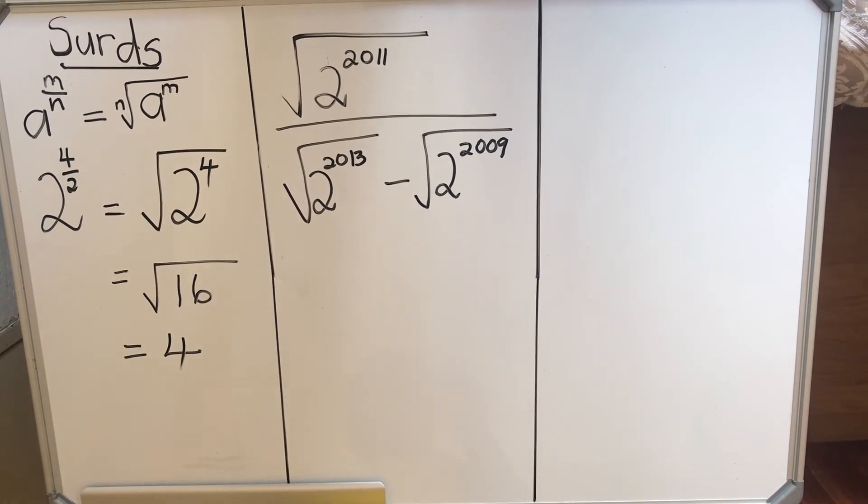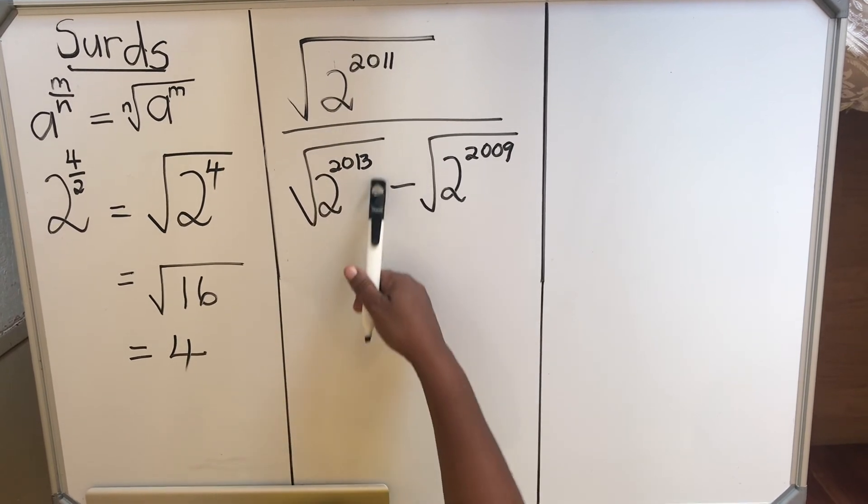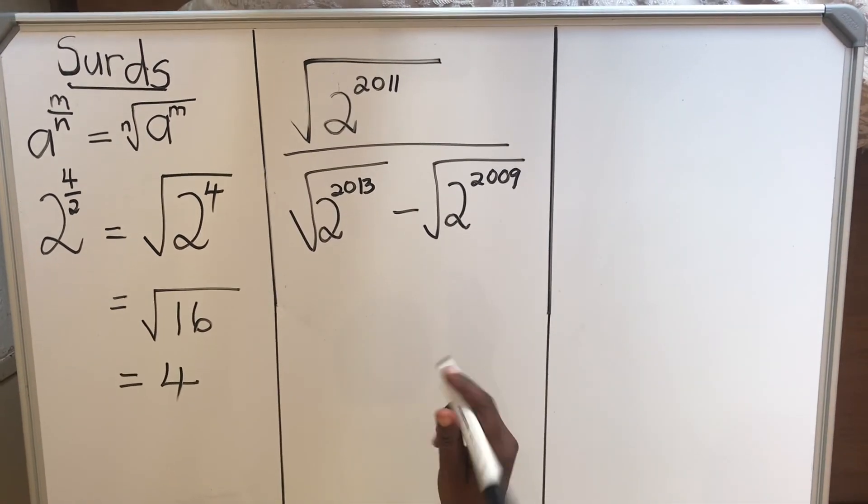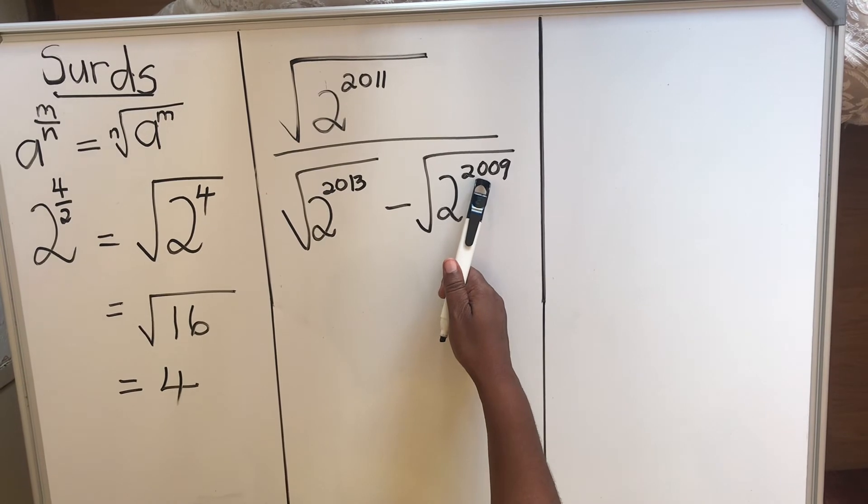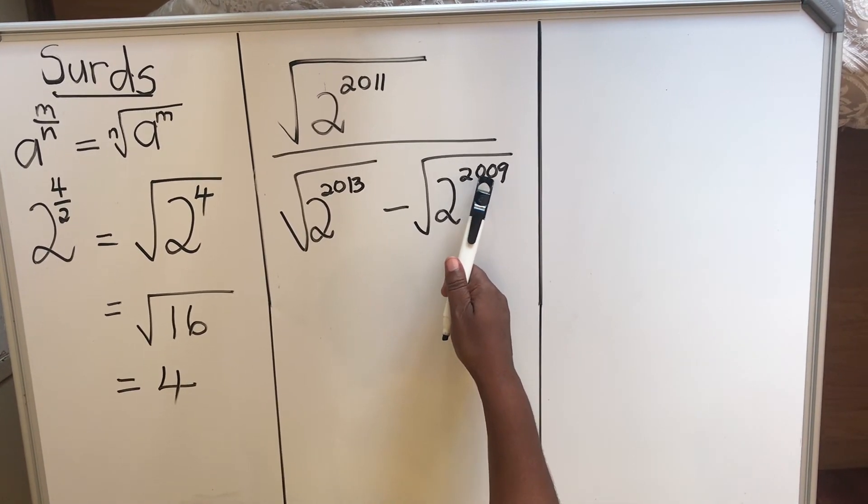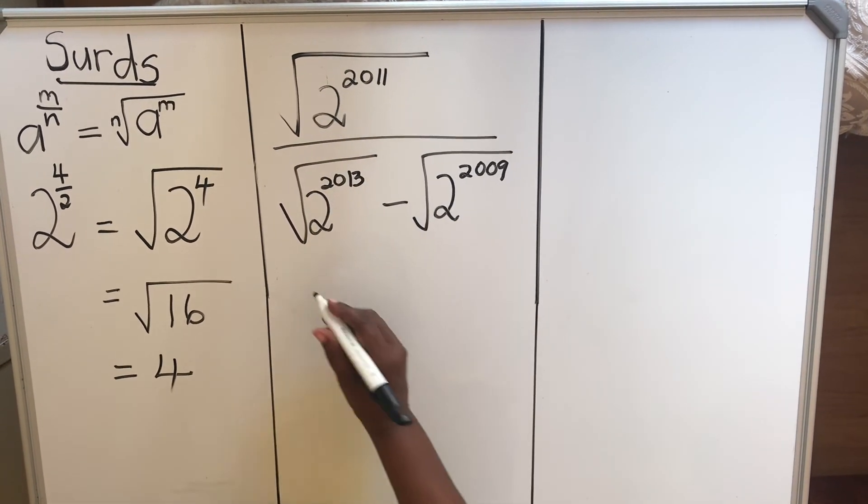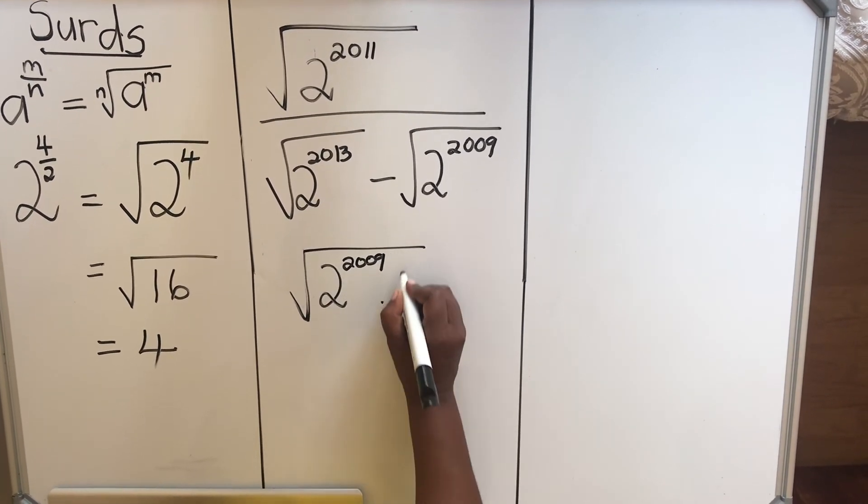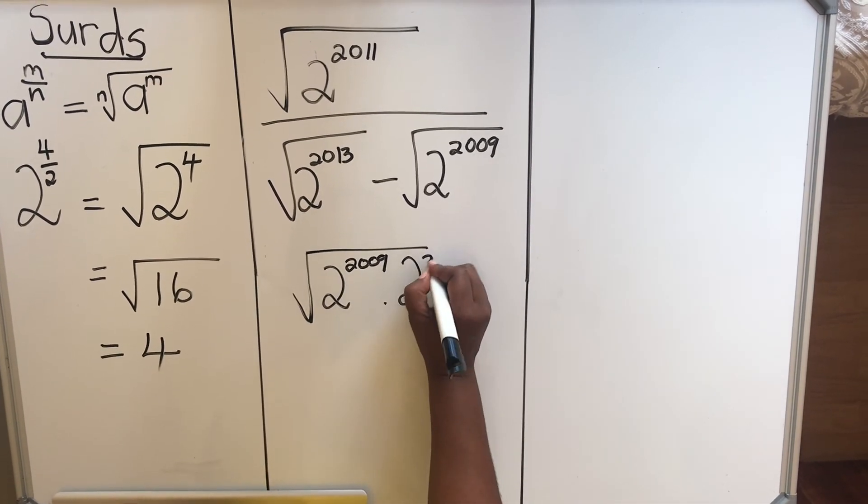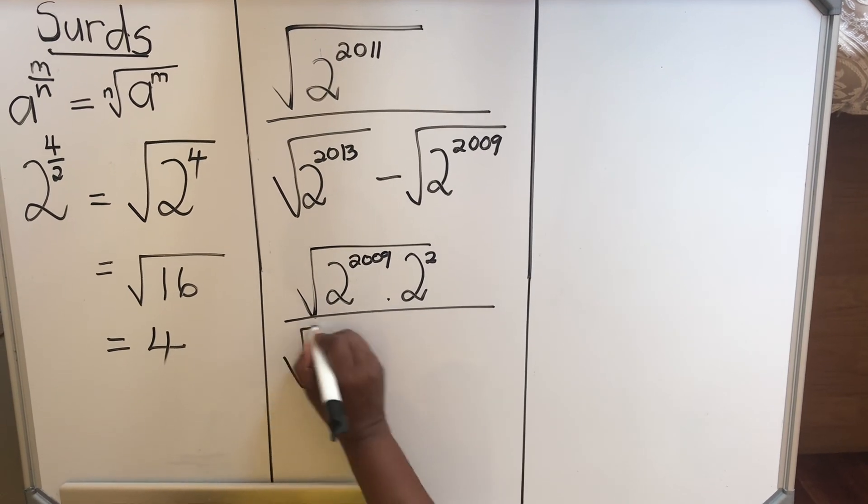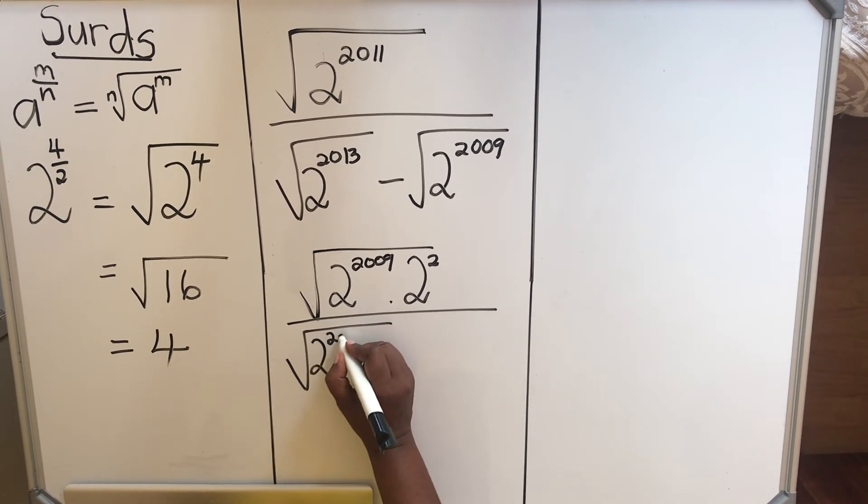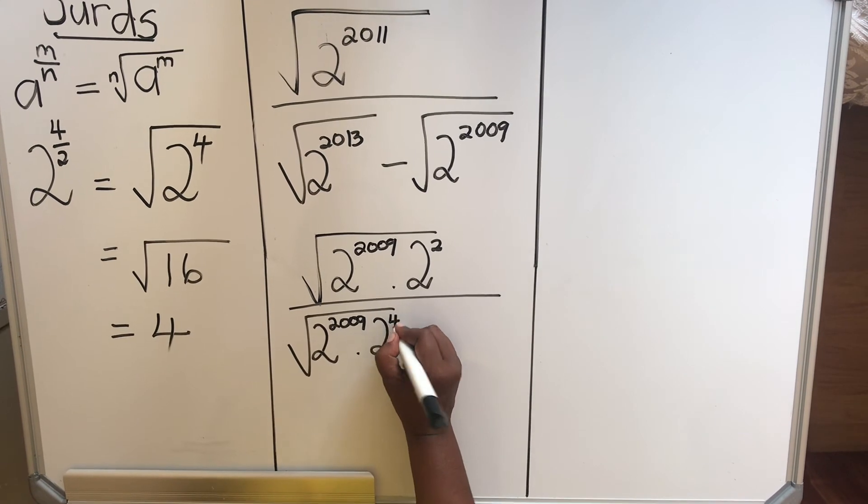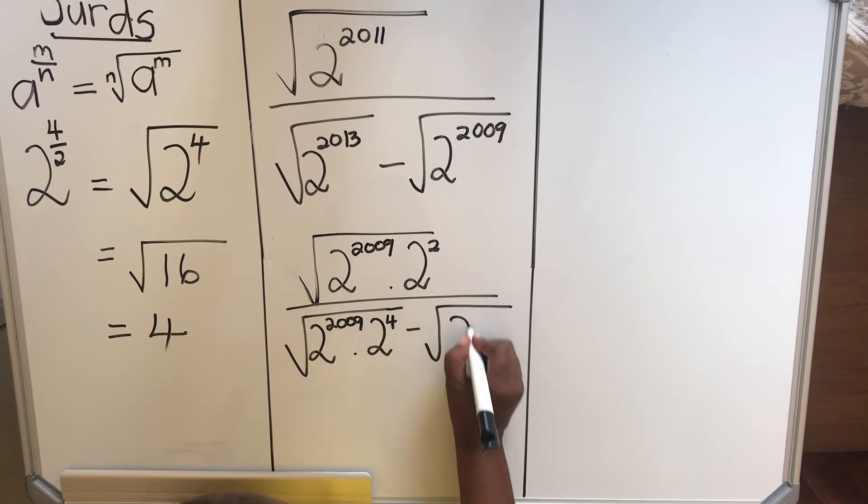The first thing that you need to remember is that you can't cancel things out because you have terms. When you have terms in any form, what you do is try and take out a common factor. Now we see that the lowest power that we have is 2009. So if we can make 2009 the base, our way could be much easier. So we'll have 2 to the power 2009 plus 2 to the power 2, divided by 2 to the power 2009 times 2 to the power 2 minus 1.